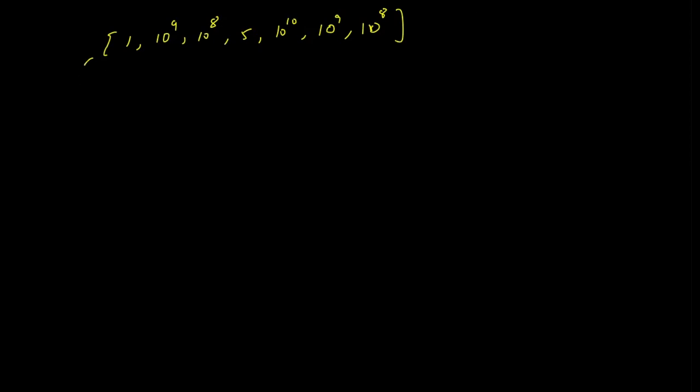So how does coordinate compression work? What you do is you take this array and sort it. So the sorted form will be 1, 5, 10 to the power 8.